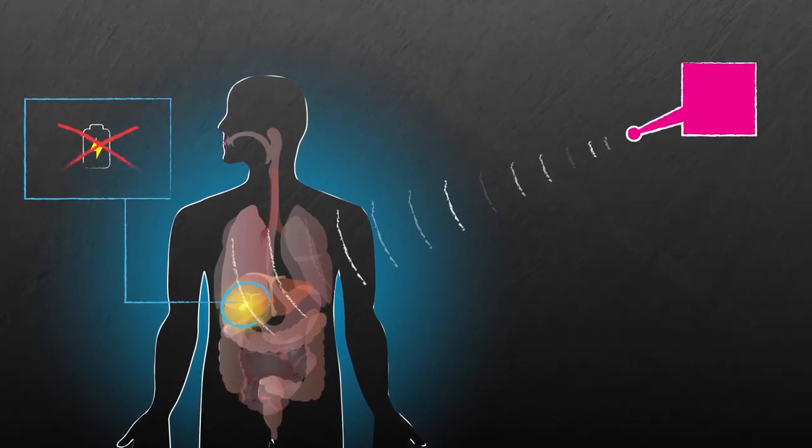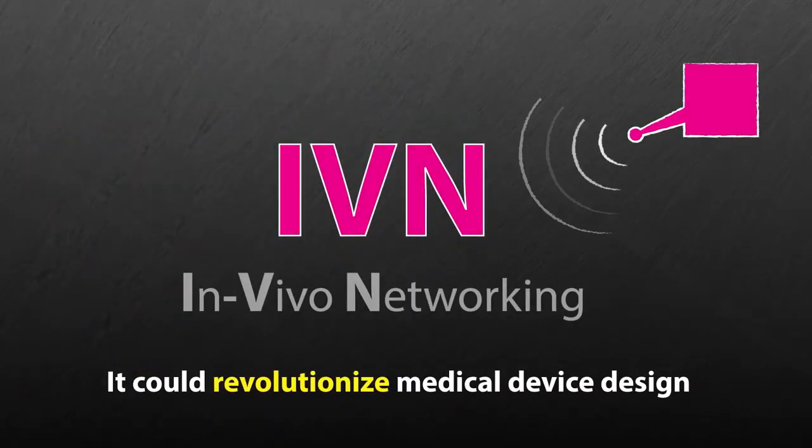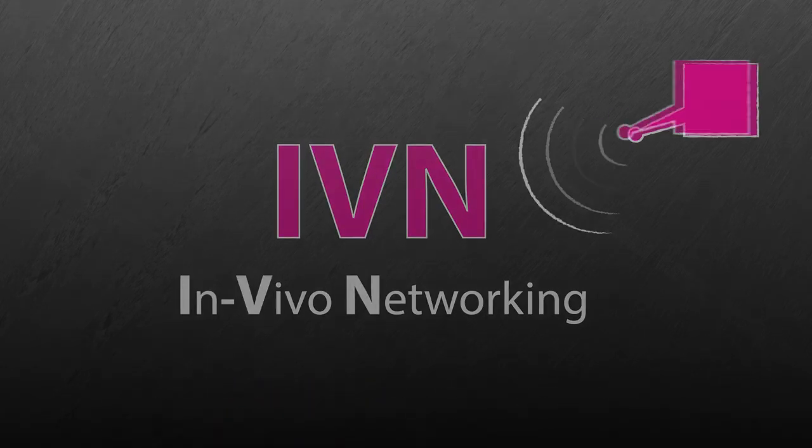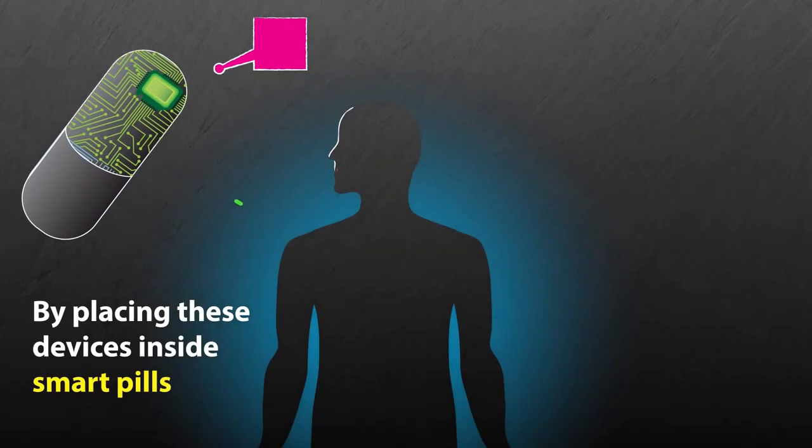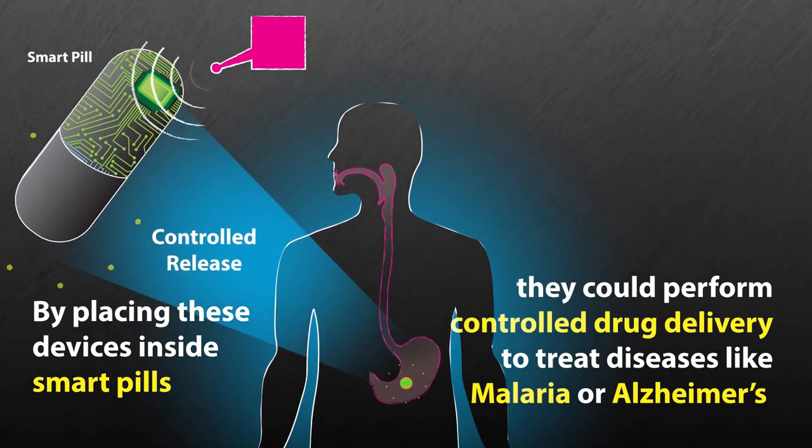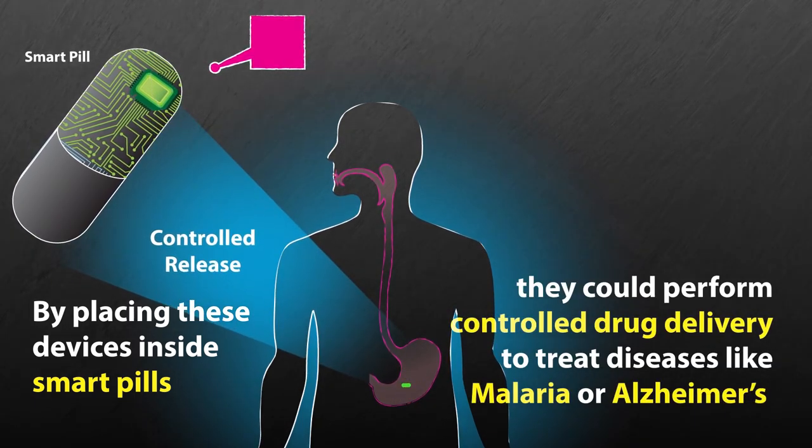The researchers envision that the technology, called IVN, could revolutionize medical device design. For example, by placing these devices inside smart pills, they could perform controlled drug delivery inside the stomach to treat diseases like malaria or Alzheimer's.